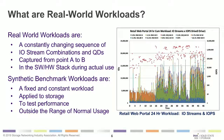Number one, real-world workloads are a constantly changing sequence of IO stream combinations and queue depths. When you look at a real-world workload, a lot of different IO streams occur and they change from moment to moment. Unlike a synthetic lab workload — which is fixed and constant, like a random 4K write or a sequential 128K read — a real-world workload can be comprised of tens, hundreds, even thousands of discrete IO streams, and those combinations change from moment to moment. The demand intensity, queue depth, and user level also change.